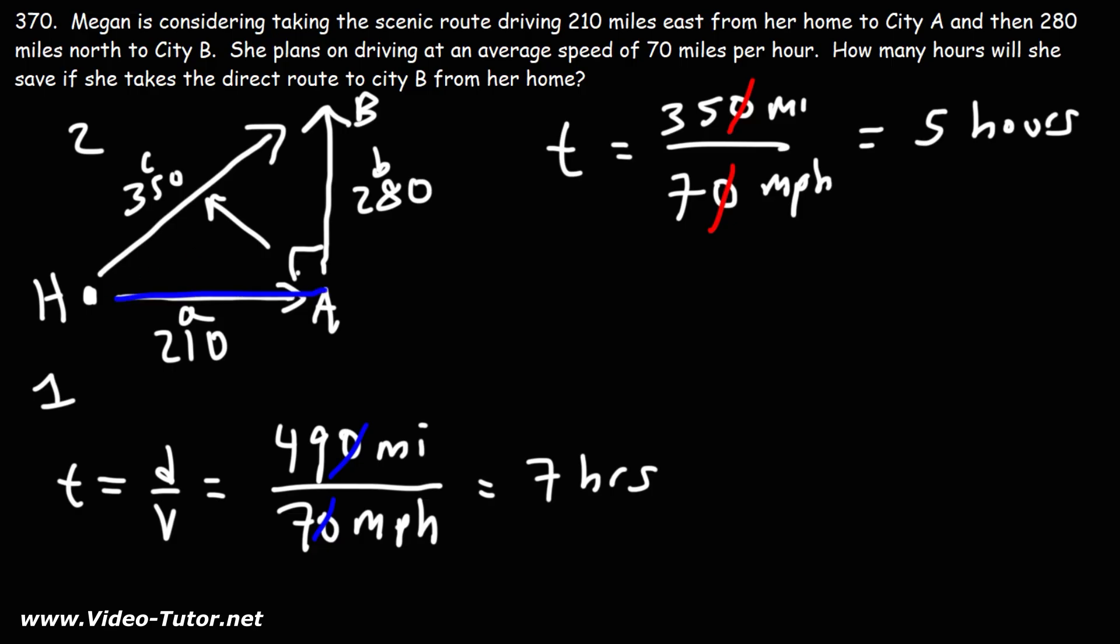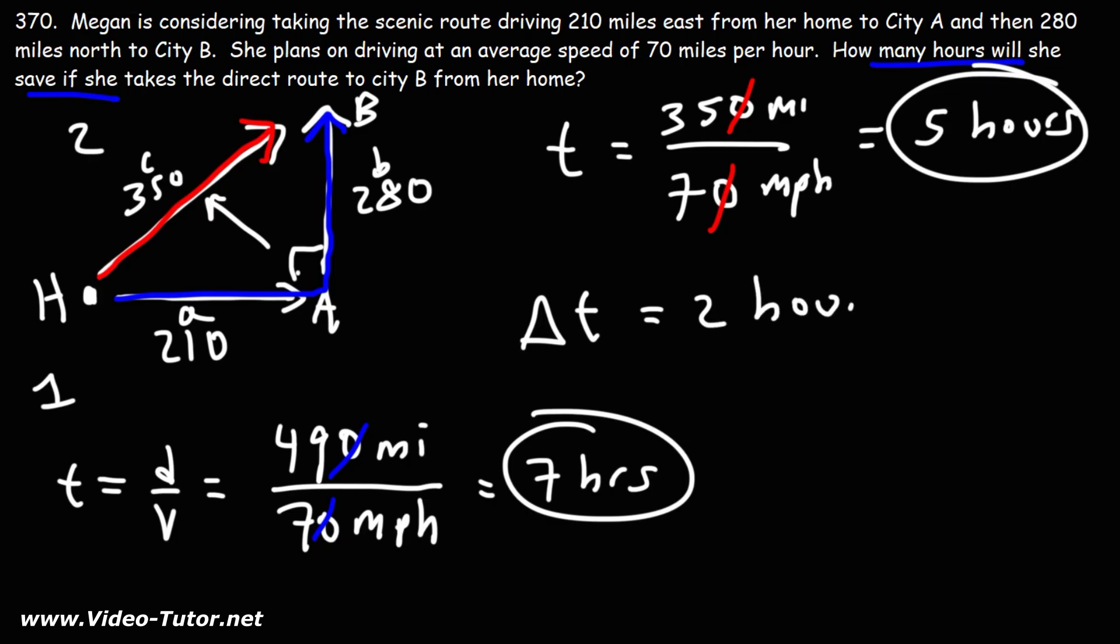So it's going to take her 7 hours to take the scenic route, but it'll take her 5 hours to take the direct route. The time that she saves if she takes the direct route is the difference between these two numbers. So we're looking for delta T, or the change in T. 7 minus 5 is 2. So she'll save 2 hours if she takes the direct route.